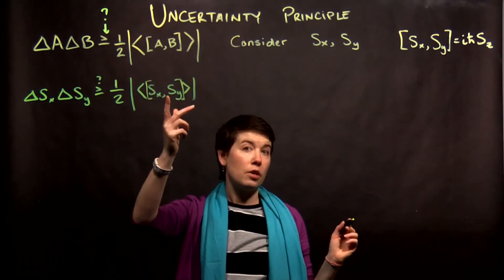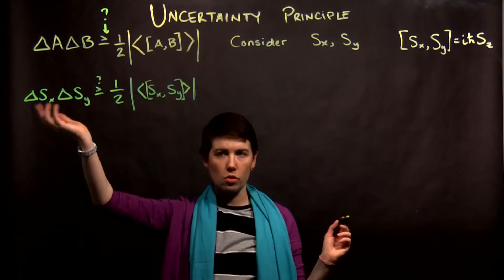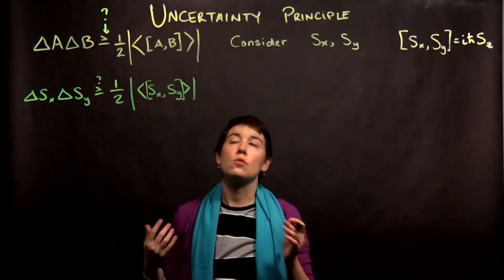that if we swapped the order here for the commutation relationship we would get a minus sign, and if we swapped these, because these are just scalars, it shouldn't matter, well, the magnitude takes care of that.